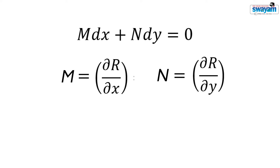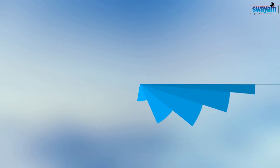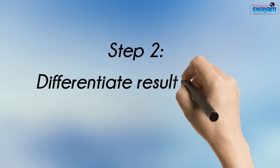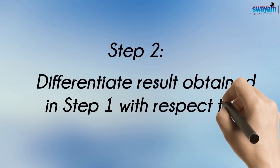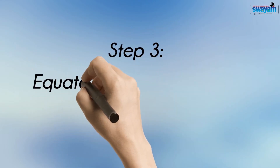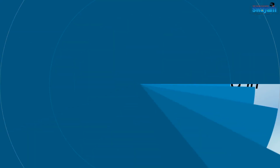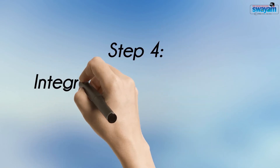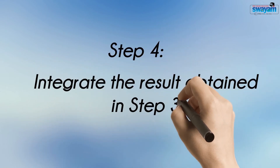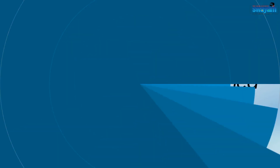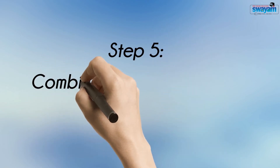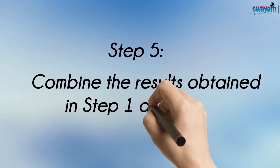In order to solve an exact differential equation, just follow these steps. Step 1: Integrate M. Step 2: Differentiate the result obtained in step 1 with respect to y. Step 3: Equate the result obtained in step 2 with N. Step 4: Integrate the result obtained in step 3. Step 5: Combine the results obtained in step 1 and step 4.